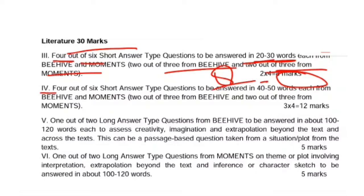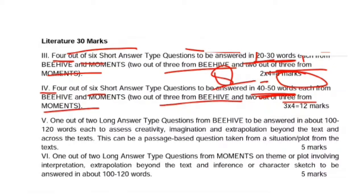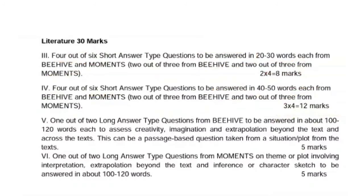The next question is also 4 out of 6, but the word limit here is different — 40 to 50 words, compared to 20 to 30 words earlier. So you can call these very short answer type and short answer type questions respectively. Again, 3 questions from Beehive and 3 from Moments, but the marking here is different — you get 3 marks per answer, making a total of 12 marks.